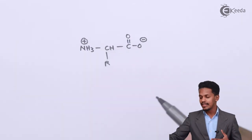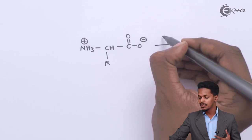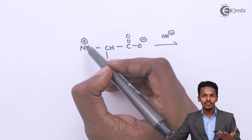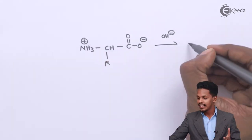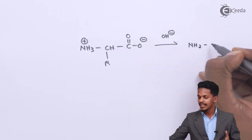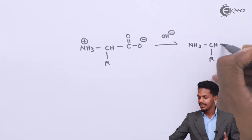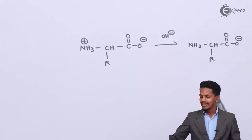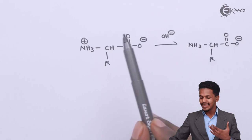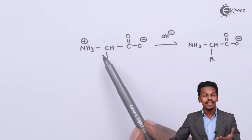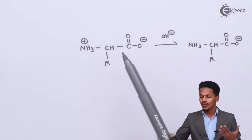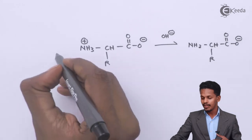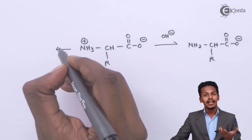Suppose this zwitterion molecule is treated with a base — OH⁻. The base will take away the proton (H⁺) from the molecule, and what we get is NH₂-CHR-C(=O)-O⁻ as an anion. So if a base reacts with this molecule, the molecule is obviously acting like an acid.